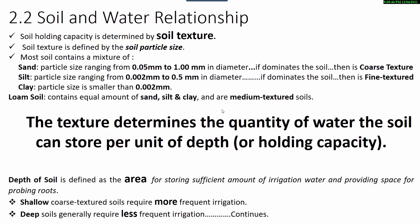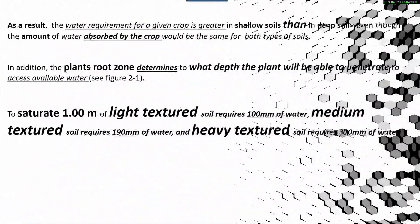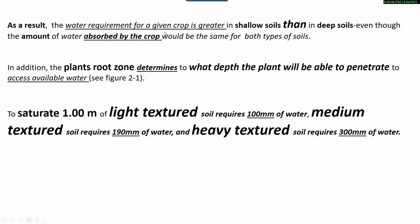The depth of soil is defined as the area for storing sufficient irrigation water and providing space for probing roots. Shallow coarse textured soil requires more frequent irrigation, while deep soils require less frequent irrigation. As a result, the water requirement for a given crop is greater in shallow soils than in deep soils, even though the amount of water absorbed by the crop would be the same for both types of soil.